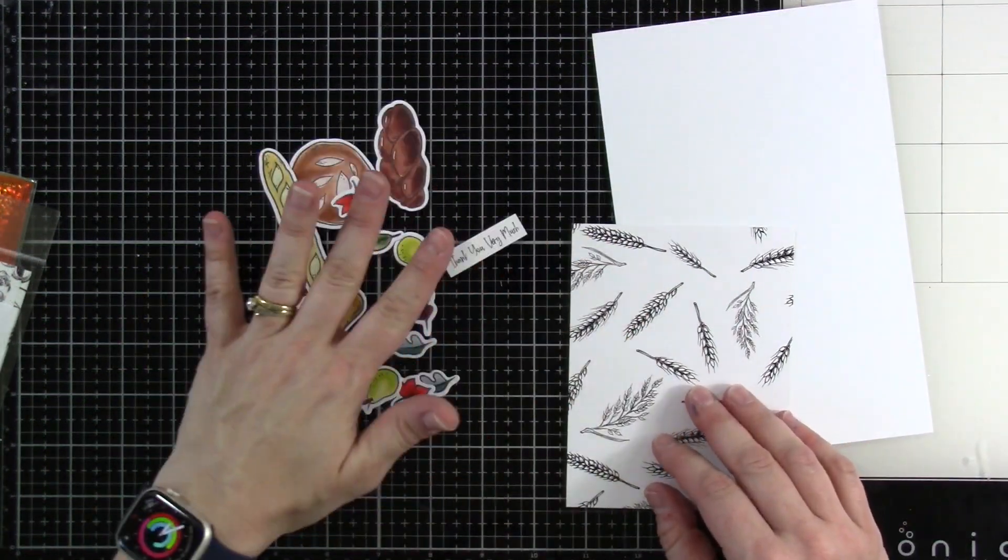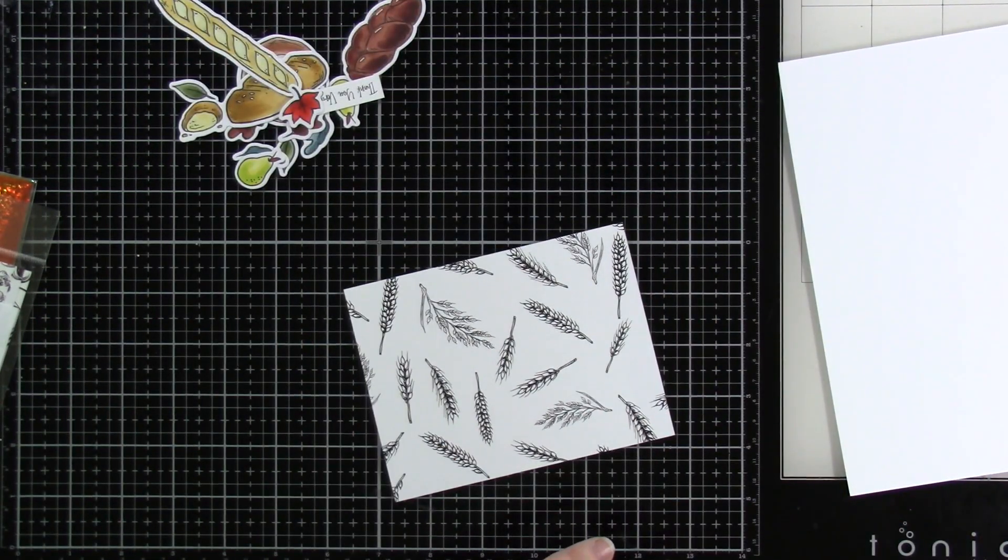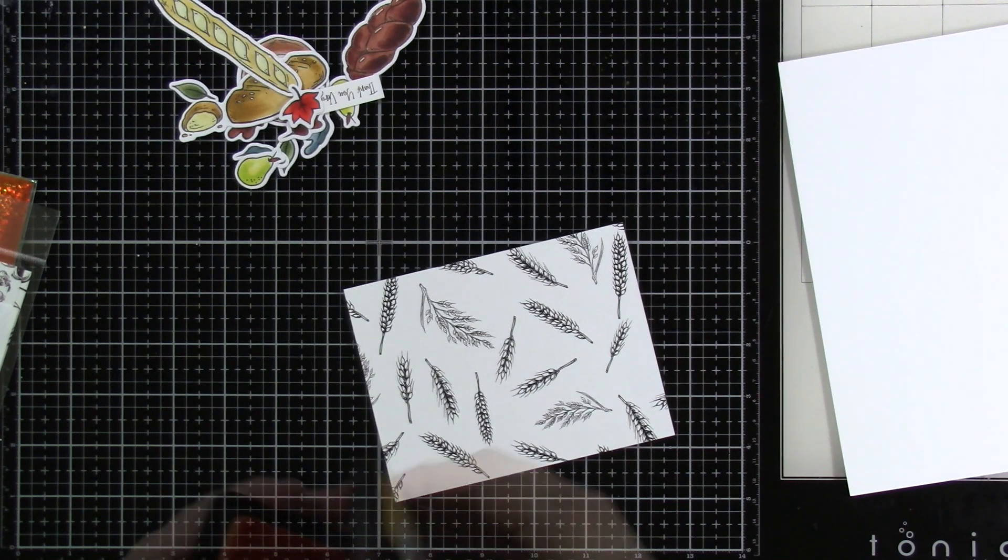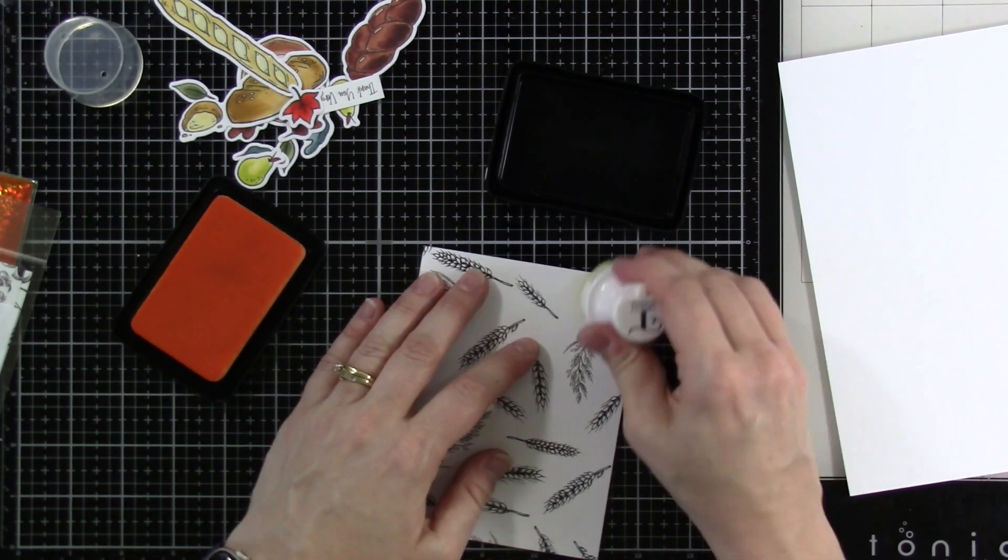The sentiments are darling and so there they are all die cut out and I'm going to use one of the foilables because of course and I am going to ink blend some color onto this one.